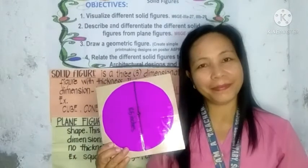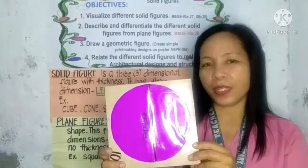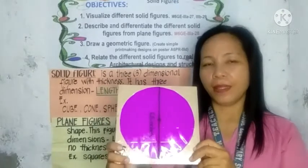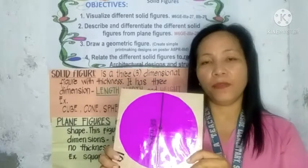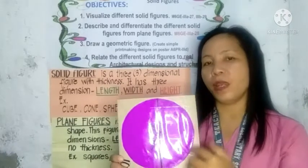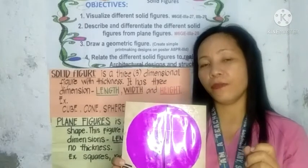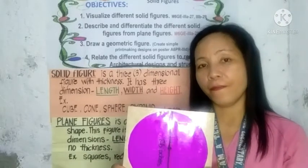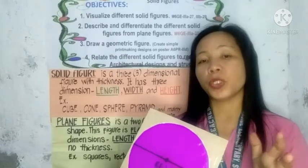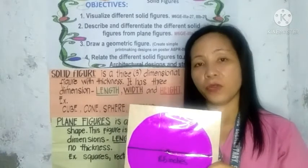What about this one? This is a circle — a flat, plane figure. In a circle, you cannot find length and width the same way. You use different terms to measure a circle.